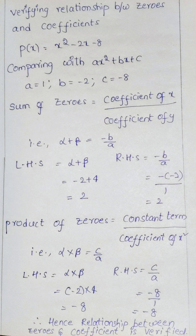Next, verify the product of zeros. The product of zeros equals the constant term divided by the coefficient of x squared. Alpha into beta equals c by a. LHS: alpha into beta equals minus 2 into 4, which is minus 8. RHS: c by a equals minus 8 by 1, which is minus 8. So LHS equals RHS for the product as well.